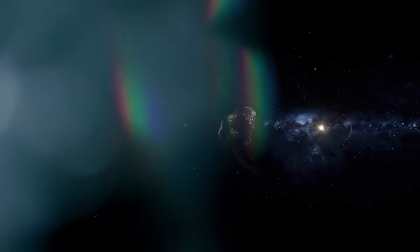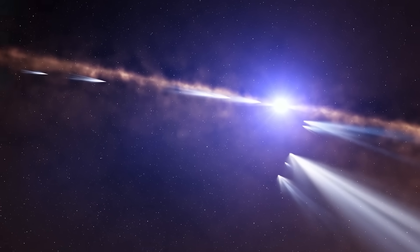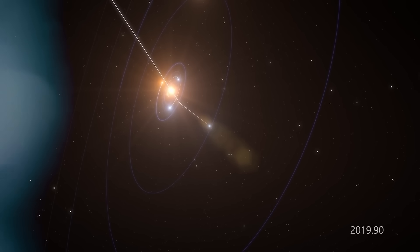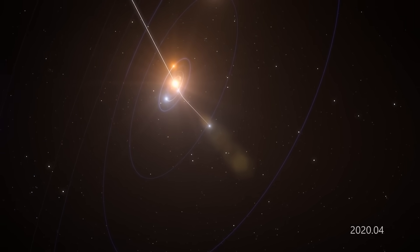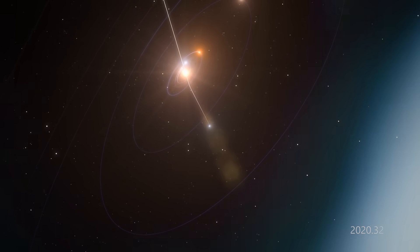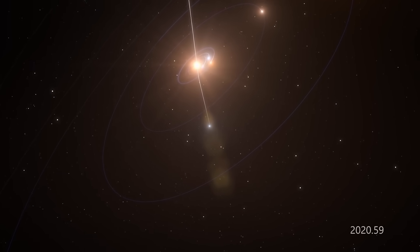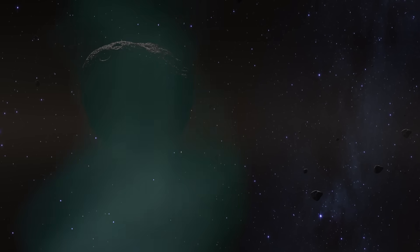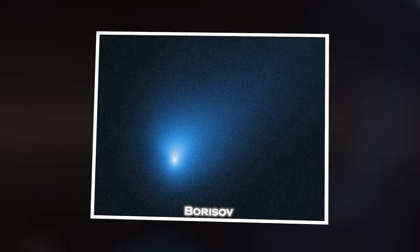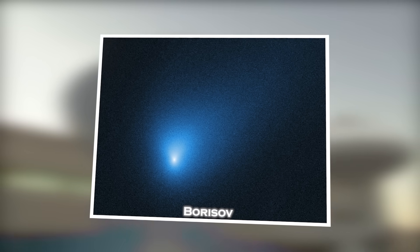To understand how serious this discovery is, we have to look at the two interstellar objects that came before it. In 2017, Oumuamua burst into the scientific world with its strange elongated shape, lack of comet tail, and mysterious acceleration after passing the sun despite showing no signs of gas or propulsion. Then, in 2019, Borisov entered the picture—clearly a comet, yes, but faster and more volatile than anything seen before.